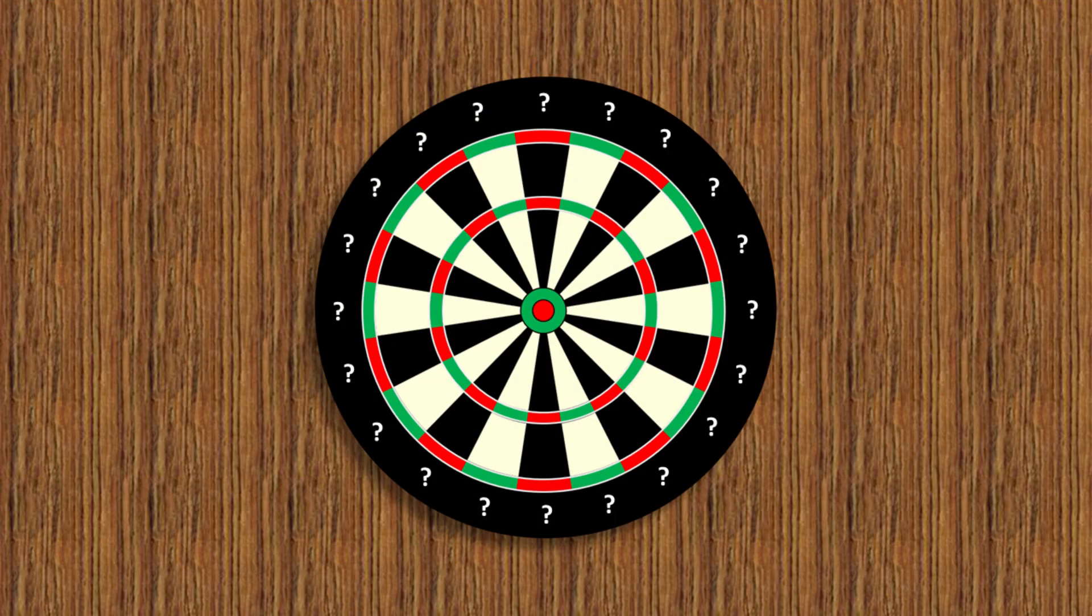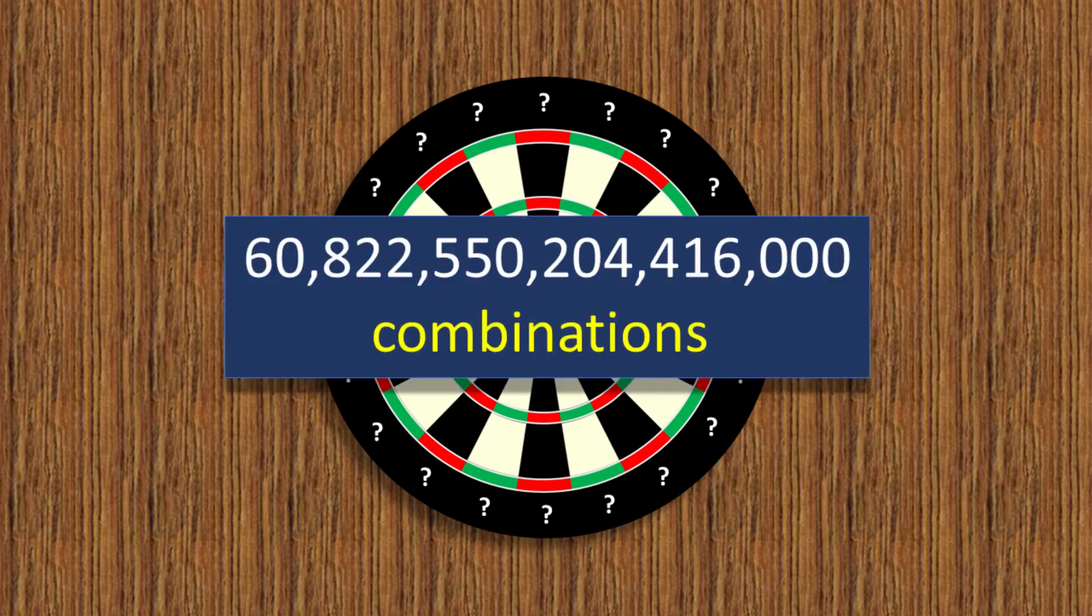So, if you're trying to solve this puzzle by trial and error, it probably took you quite a while. Not surprising really, there's over 60 quadrillion different ways to arrange numbers in a dartboard.